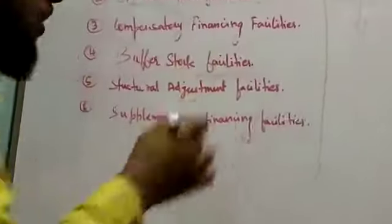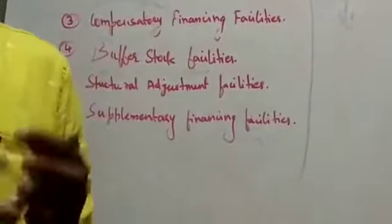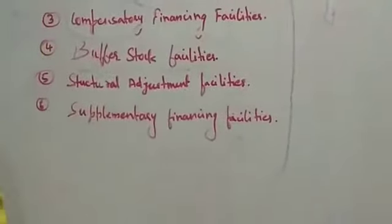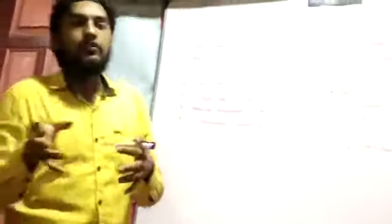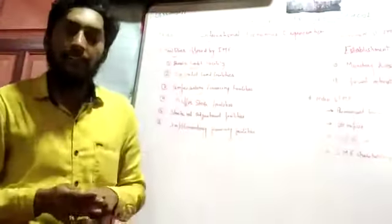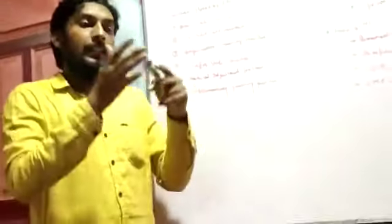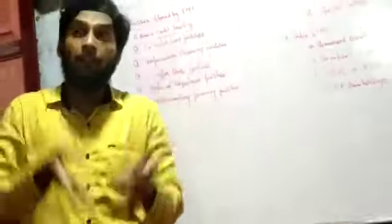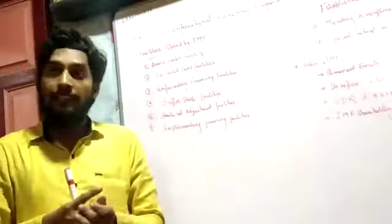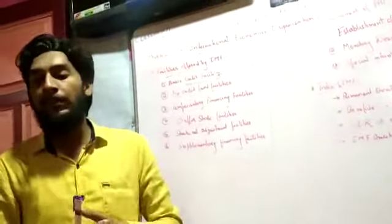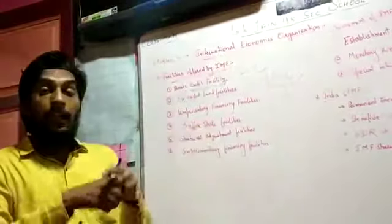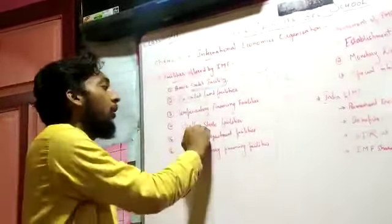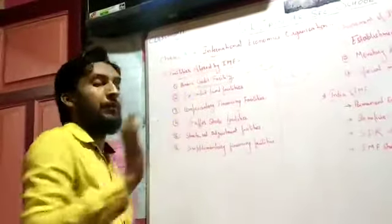Number four: buffer stock facility. You need excess fund when you are in a depression in trade. The International Monetary Fund provides you some stock when it is not available or might not be available in the future. You can ask IMF about this problem, and the excess stock will be made available to you by the IMF.